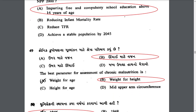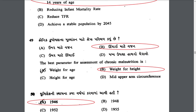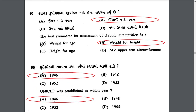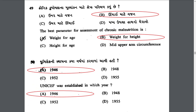The best parameter for assessment of chronic malnutrition is weight for height. UNICEF was established in the year 1946.